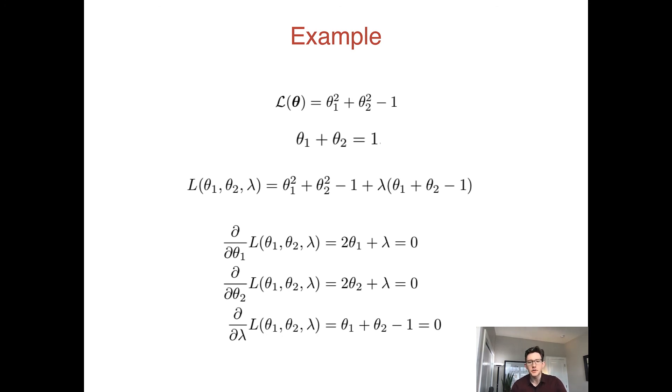We can do the math and find that the answer is θ₁ equals θ₂ equals 0.5, which you'll notice satisfies the constraint and also subject to that constraint minimizes this function.